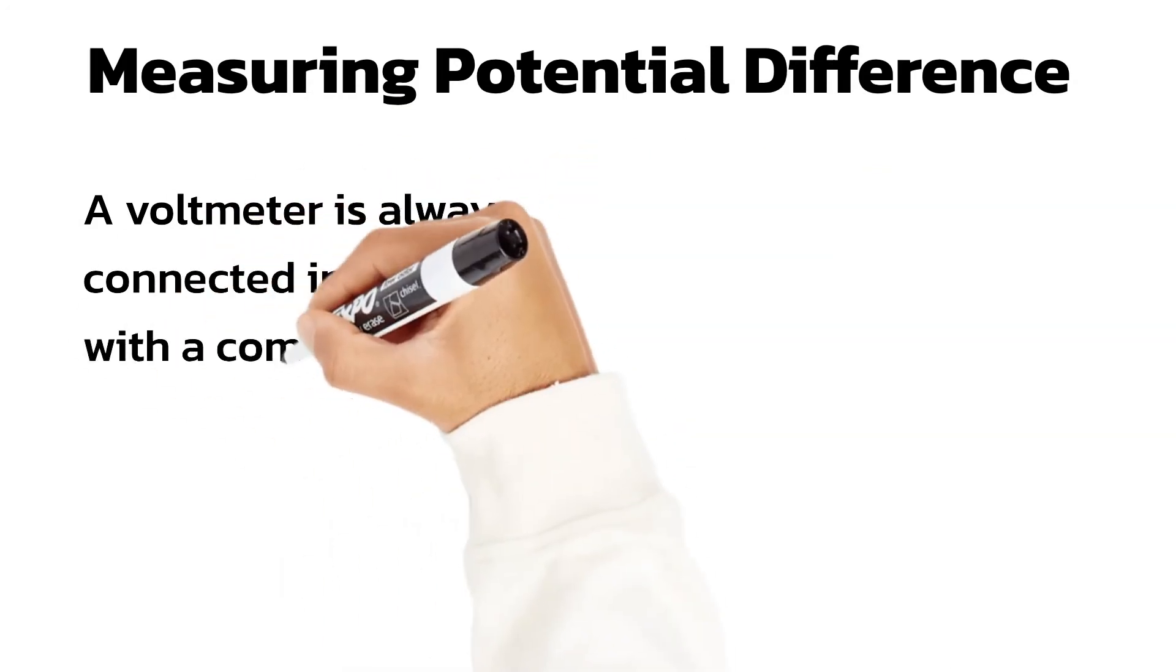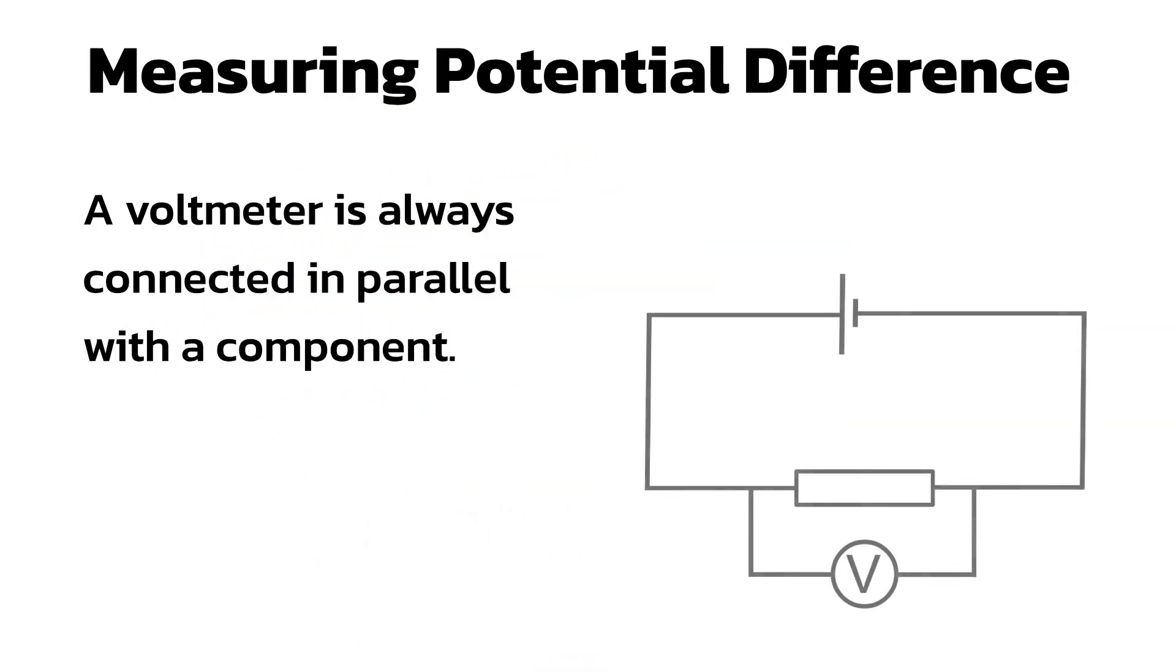Voltmeters are always connected across the component to make a separate loop in the circuit. This is known as connecting in parallel.